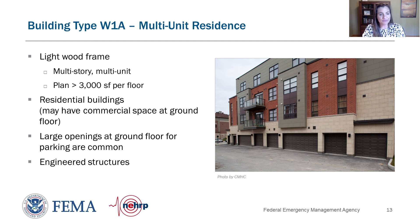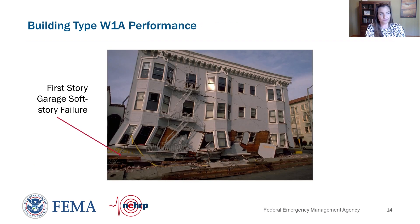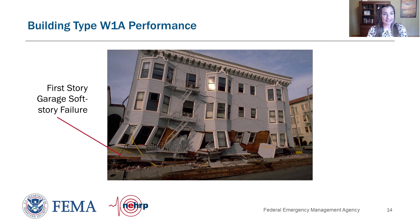These W1A type buildings have performed poorly in past earthquakes because of the soft story. A photograph from the 1989 Loma Prieta earthquake shows a soft story apartment building in the Marina District that was damaged. The structure completely collapsed onto the first floor garage area due to the soft story — the first story had much less stiffness and strength than the upper floors, concentrating the damage at the first story.